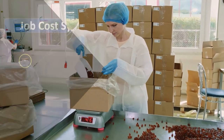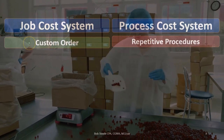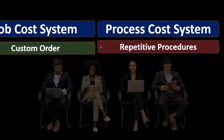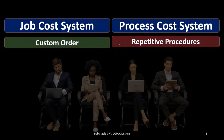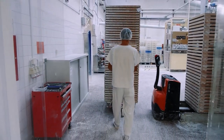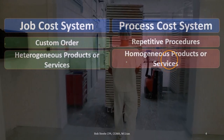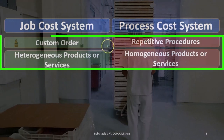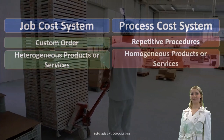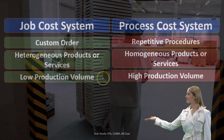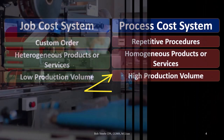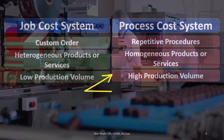Looking at job cost and process cost systems together: the job cost system involves custom orders, while the process cost system involves non-custom, repetitive procedures. Job costing yields heterogeneous production; process costing yields homogeneous production. This follows from custom versus non-custom — job costing produces different products and services through customization, while process costing produces identical items. The job cost system has low production volume because items are all different, while the process cost system has high production volume because they're all the same, allowing us to scale up and produce a lot more.